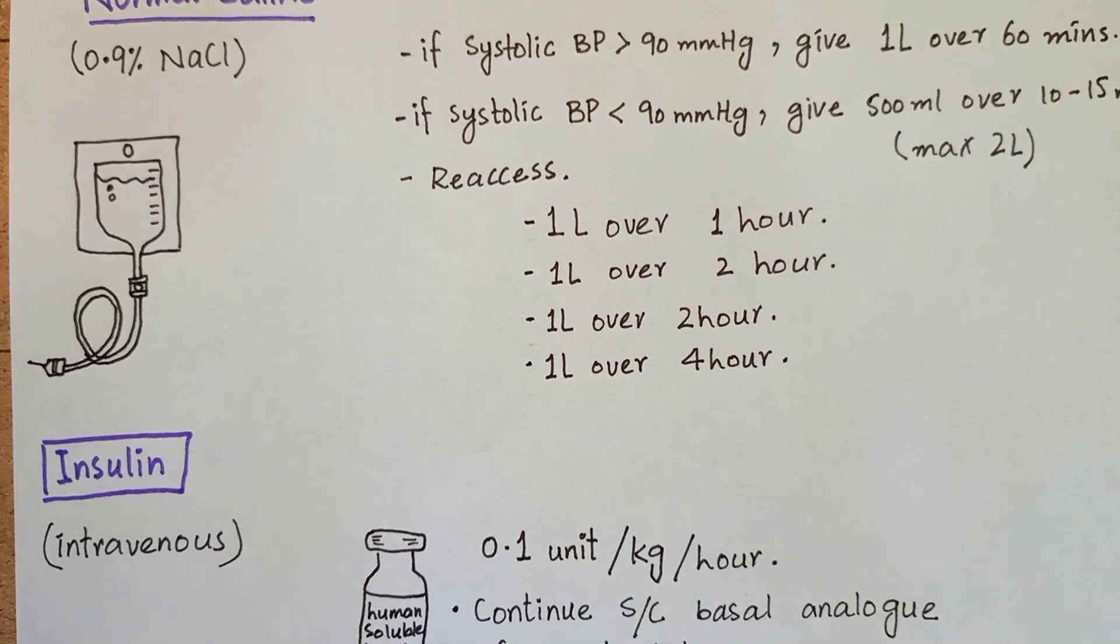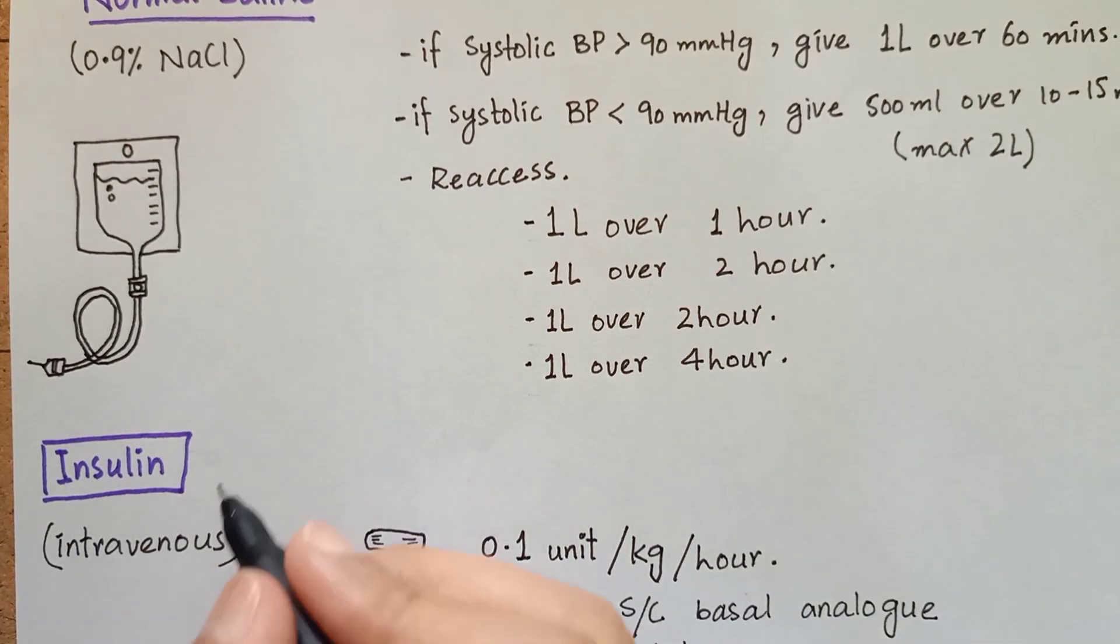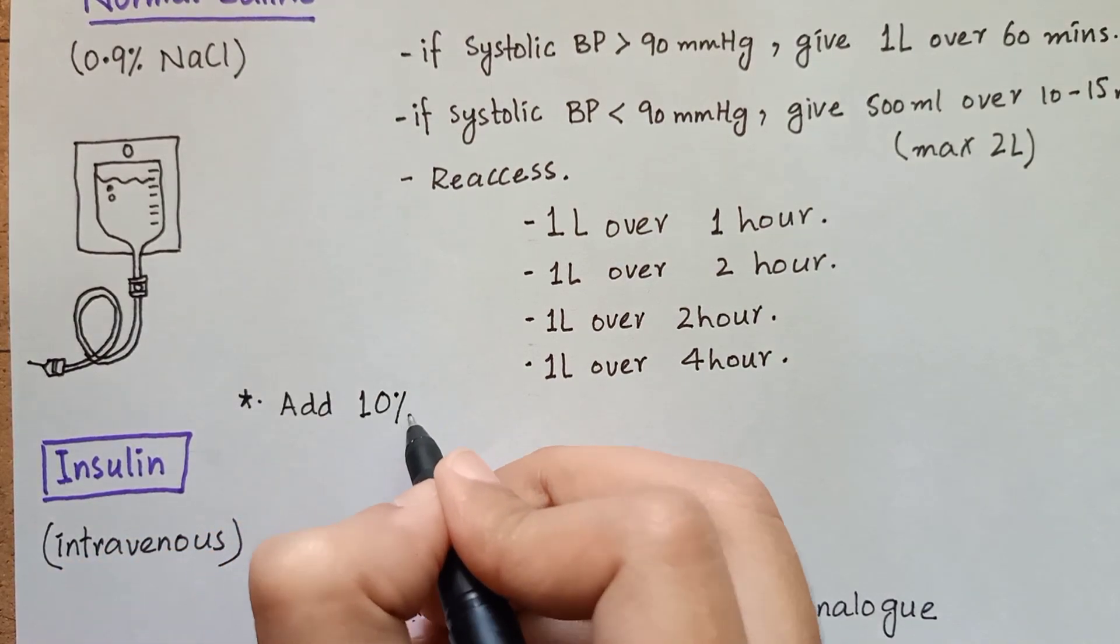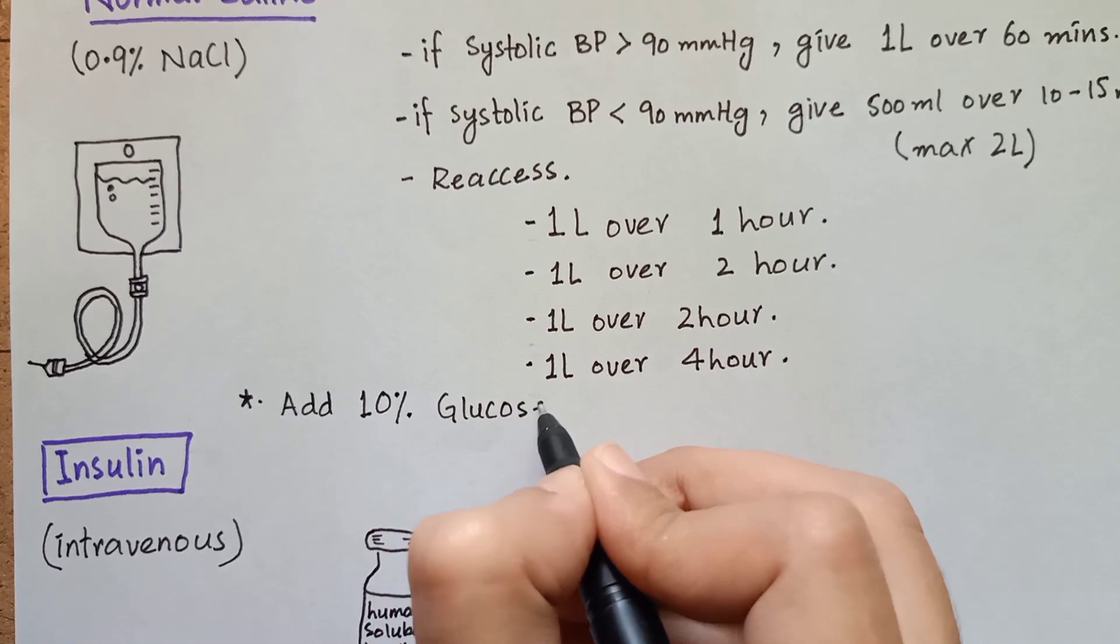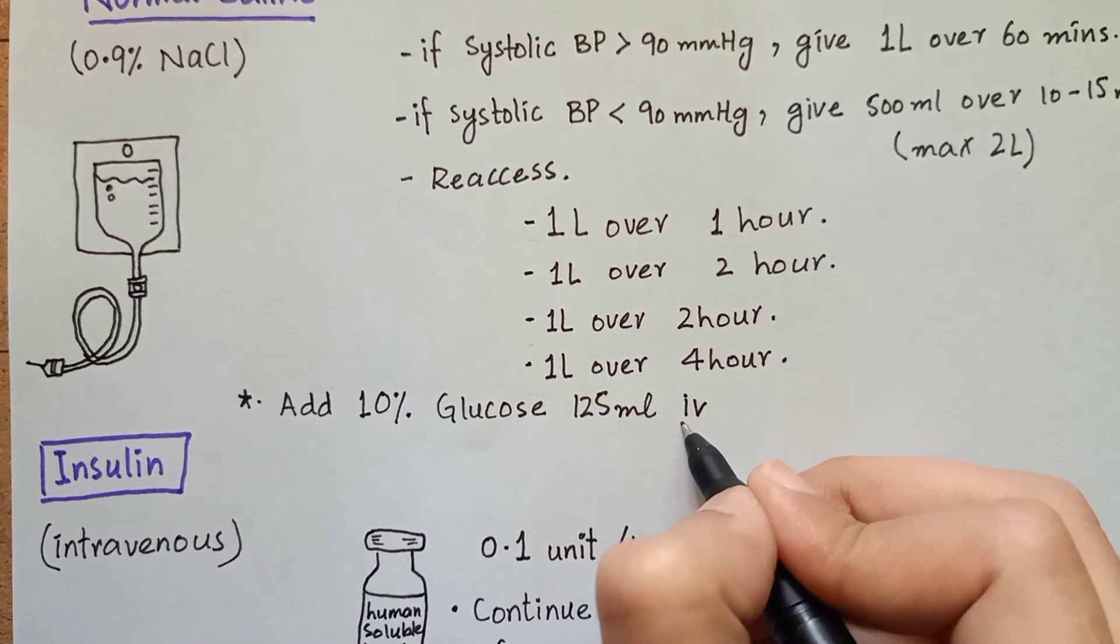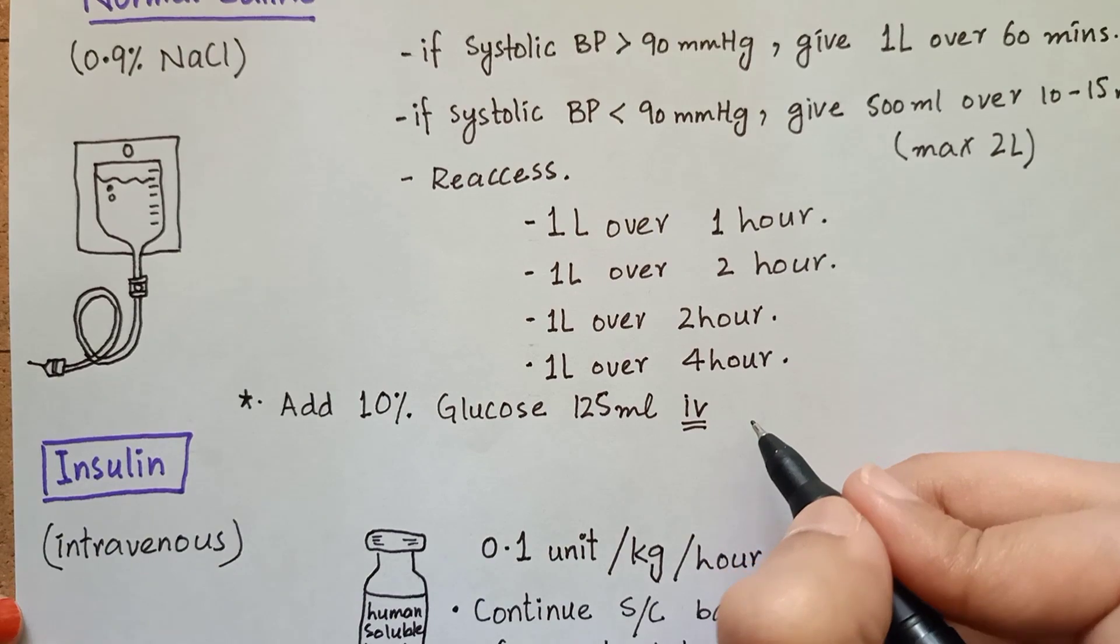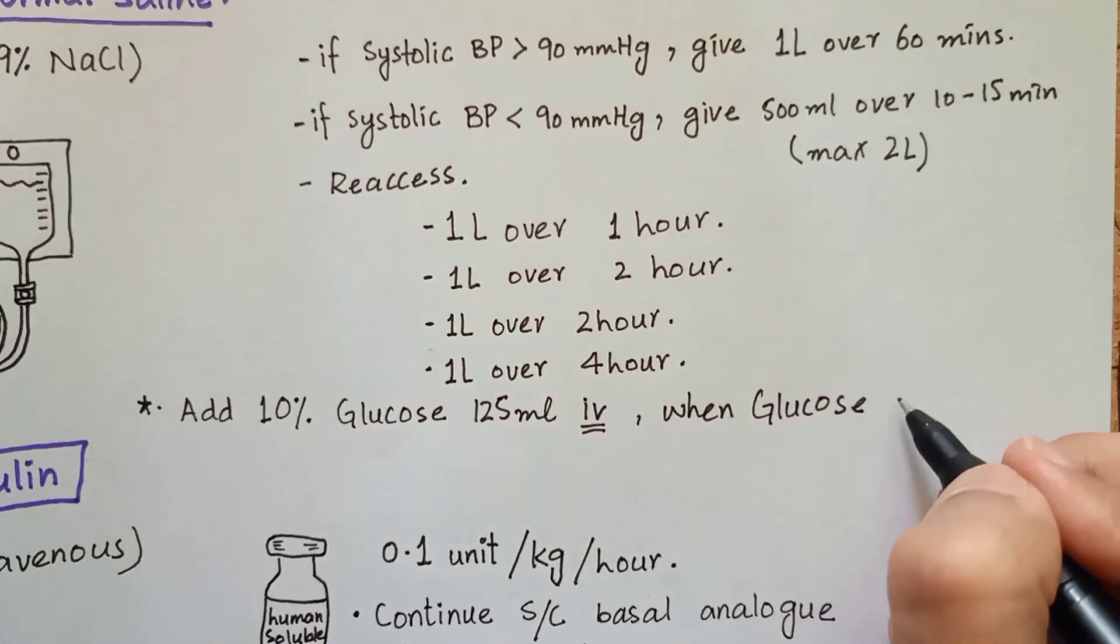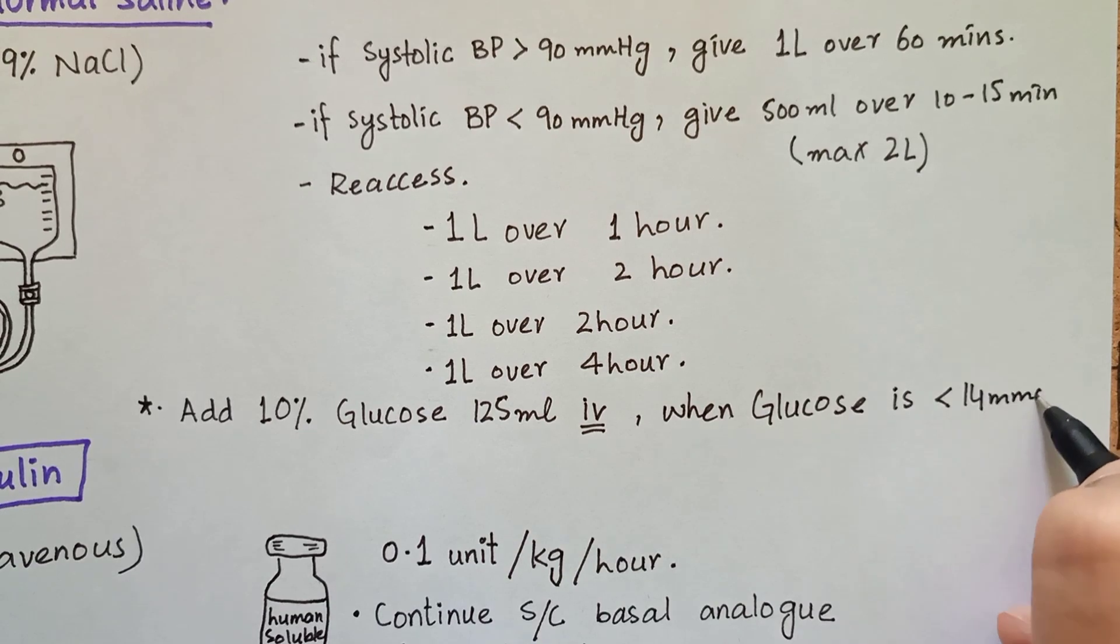Insulin and this much intravenous fluid can obviously cause hypoglycemia. In order to avoid hypoglycemia, you will add 10% glucose at the rate of 125 ml per hour intravenously when blood glucose levels fall below 14 millimole per liter.